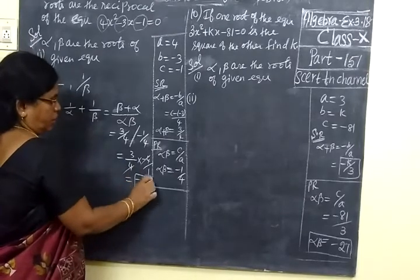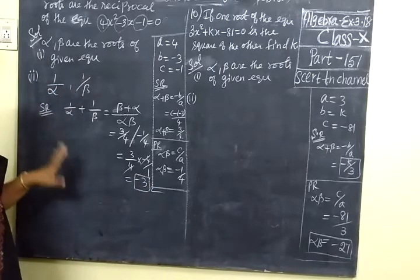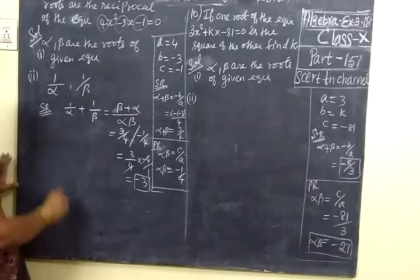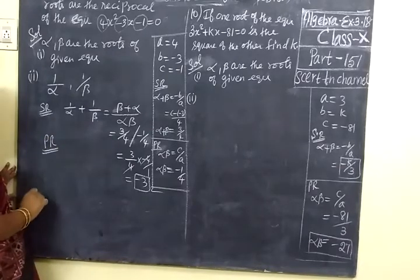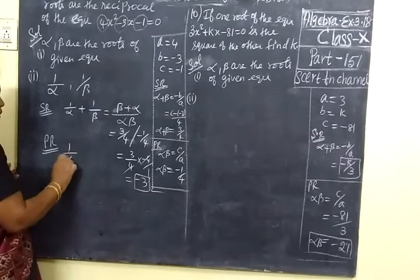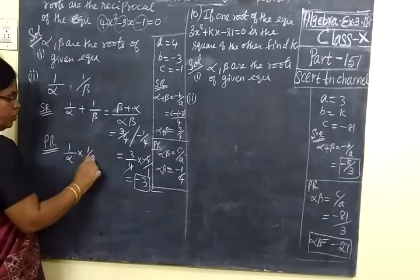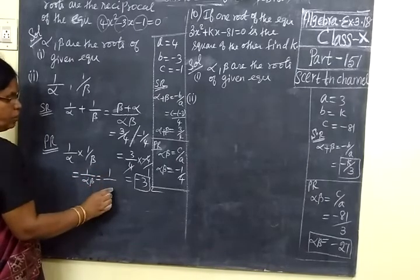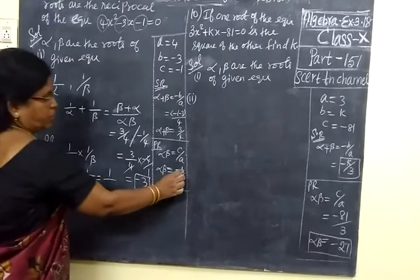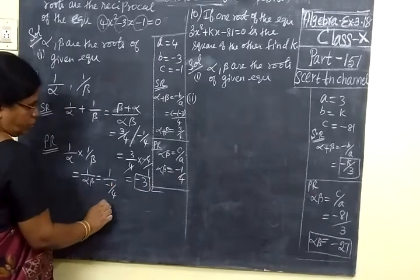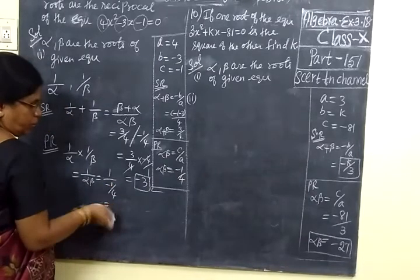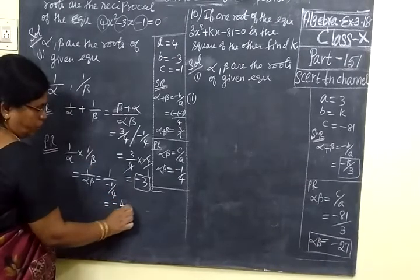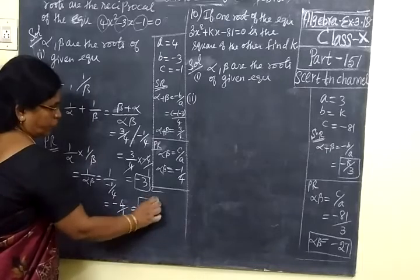So the sum of roots is minus 3. Next, the product of roots: 1 by alpha multiplied by 1 by beta equals 1 by alpha beta. Alpha beta equals minus 1 by 4, so the reciprocal gives minus 4 by 1, which equals minus 4.